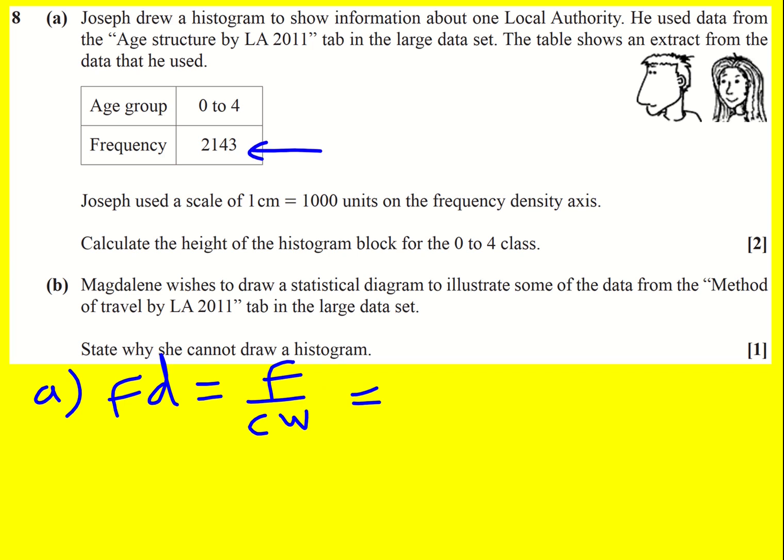Well the frequency is right here, so it's just 2,143. The class width is right here, or is it? Actually when we measure age we tend to say something like 0 to 4 and the next one would be maybe 5 to 8 or something.